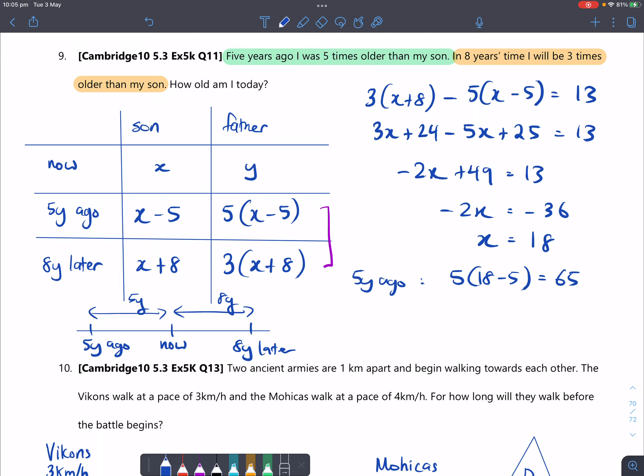So he was 65 years old five years ago. But that means his present age is five years after that, which is now 70. So his current age of father would be 65 plus 5, which is 70 years old.